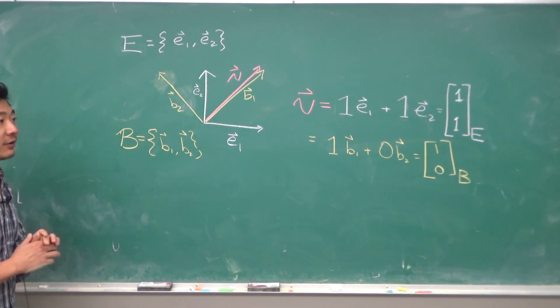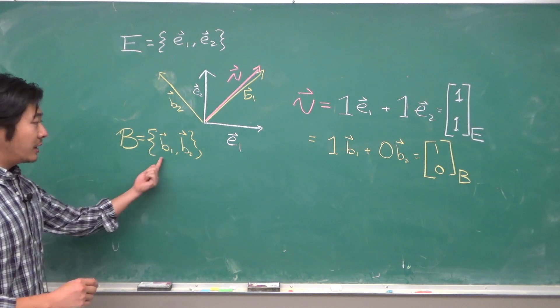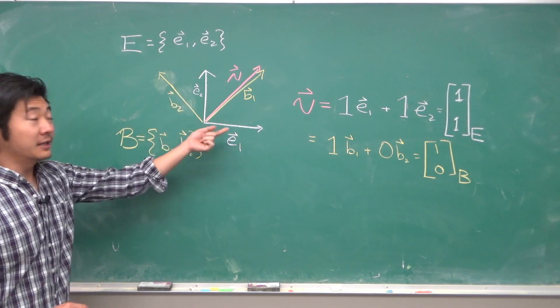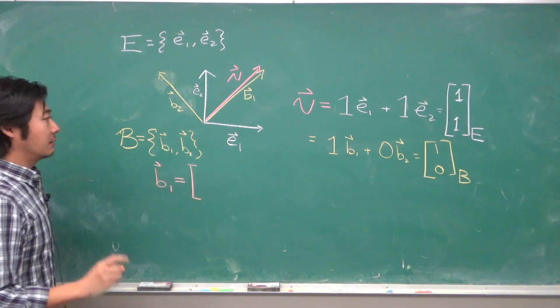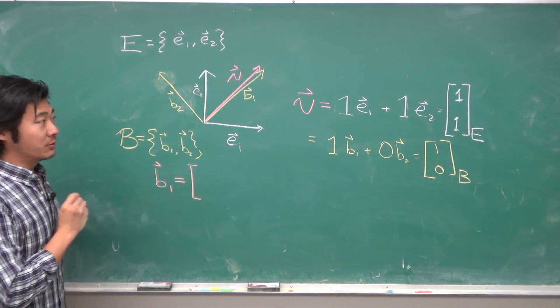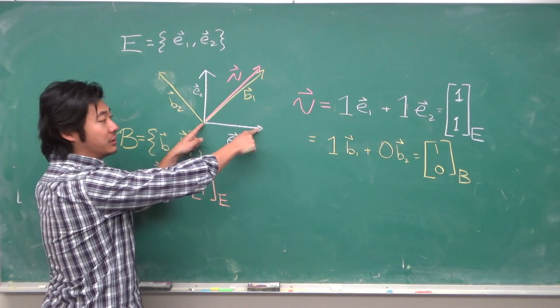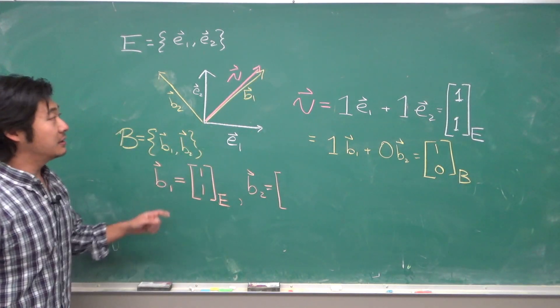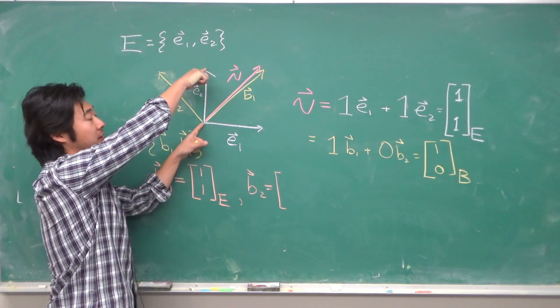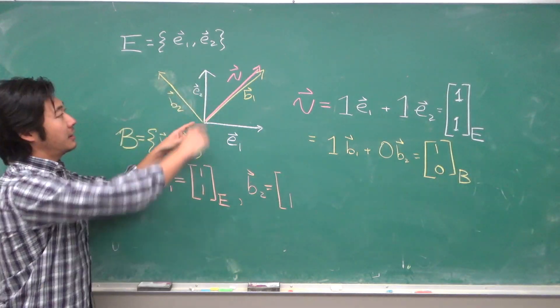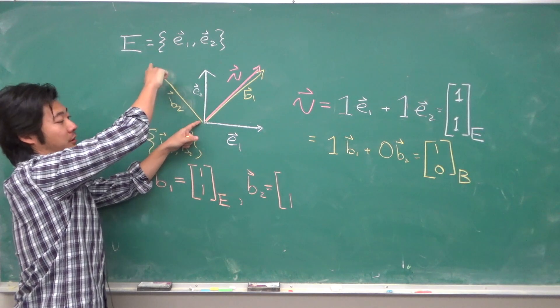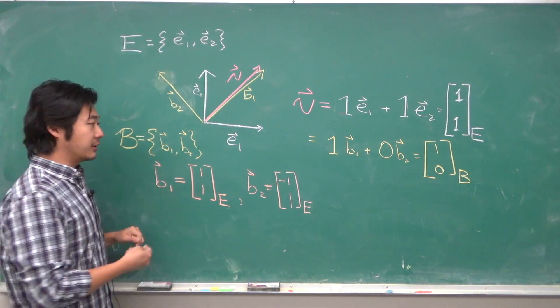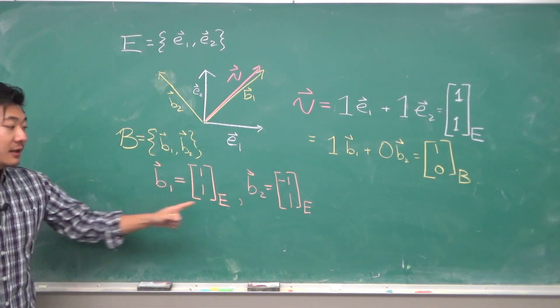So now, how can we go from one to the other? B1 and B2 are vectors that we can describe in the E1 and E2 basis. Namely, B1 will be 1, 1, because it goes one unit in the E1 direction, one unit in the E2 direction. B2 goes one unit in the E2 direction and negative one unit in the E1 direction. So, B1, B2 looks like this in the E basis.